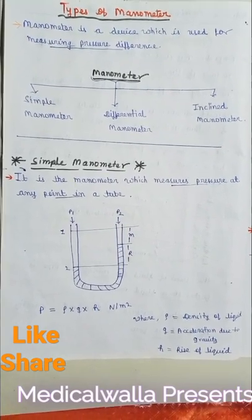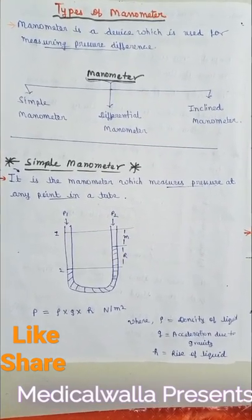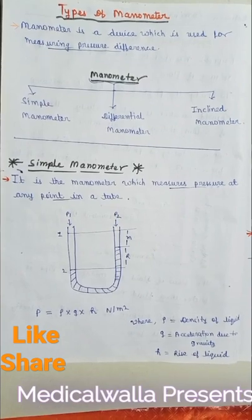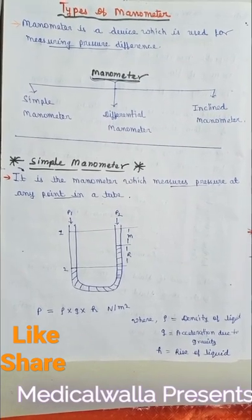P is equal to rho into g into h, Newton per meter square. Where rho is equal to density of the liquid, g is equal to acceleration due to gravity, and h is equal to rise of liquid.